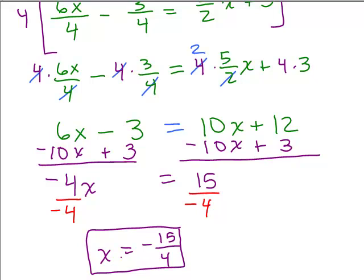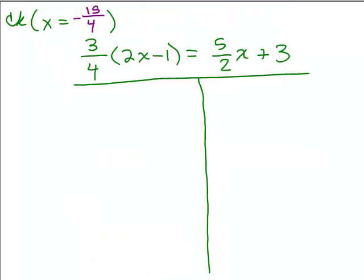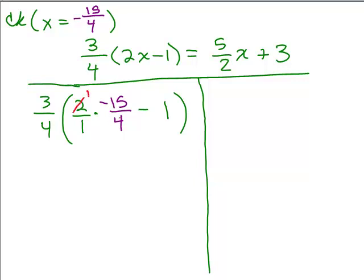So let's go ahead and check our answer to see if negative 15 fourths is the right answer. So we're going to plug in negative 15 fourths for x and we're going to do our order of operations. So we have 3/4 times 2 over 1 times negative 15 fourths minus 1. All right, so we need to simplify this. So I can cancel the 2 and the 4 to get it down to that. Makes it a little bit easier, smaller numbers. So we have 3/4 times, I've got negative 15 halves.